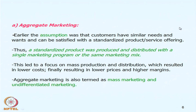Market aggregation, or aggregate marketing, was where a standardized product was produced and distributed with a single marketing program or the same marketing mix. The assumption was that consumers have similar needs and wants and can be satisfied with a standardized offering. This led to a focus on mass production and mass distribution, leading to lower costs, higher profit margins, lower prices for consumers, and higher profits for the marketer. Aggregate marketing also came to be known as mass marketing or undifferentiated marketing.